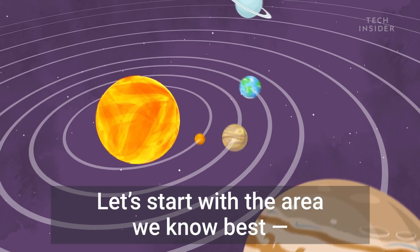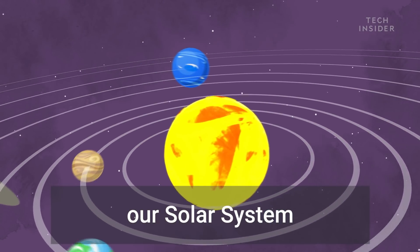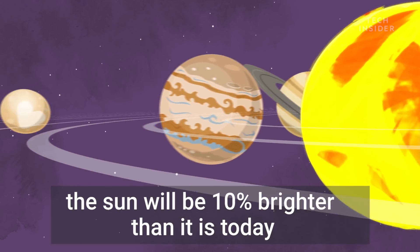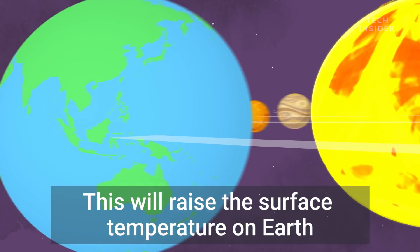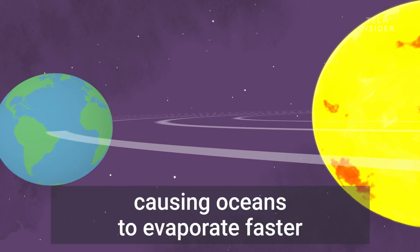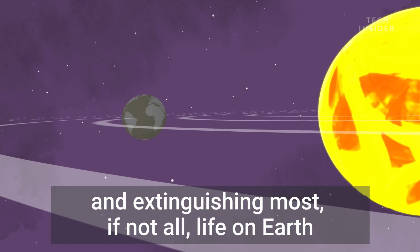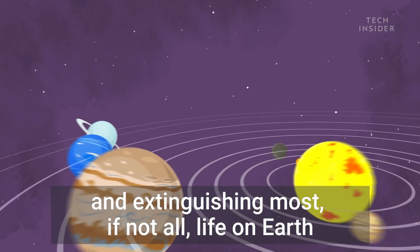Let's start with the area we know best, our solar system. One billion years from now, the sun will be 10% brighter than it is today. This will raise the surface temperature on Earth, causing oceans to evaporate faster and extinguishing most, if not all, life on Earth.